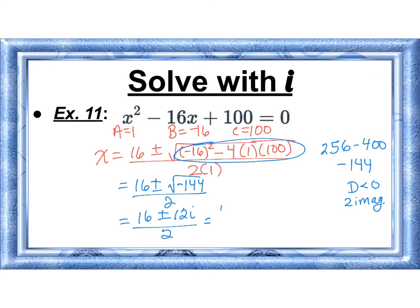Separate my fractions. And I get 8 plus minus 6i for my two imaginary solutions.